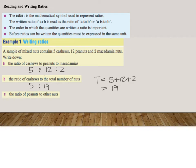What is the ratio in C of peanuts? Peanuts, colon, the other nuts. So in this case, the other nuts will be 5 cashews and 2 macadamias, that will be 7, so the ratio will be 12 to 7.